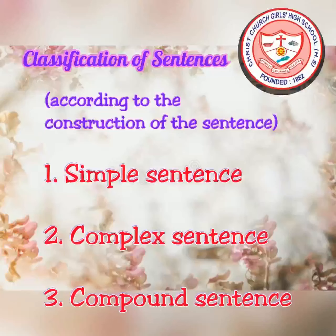According to the construction of the sentence, sentences are classified into three kinds: simple sentence, complex sentence, and compound sentence. Now we will discuss the construction of each of these three kinds of sentences in detail.